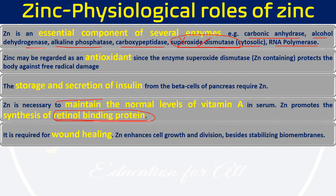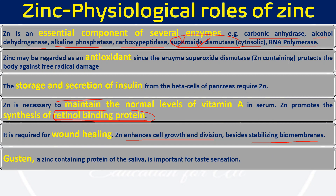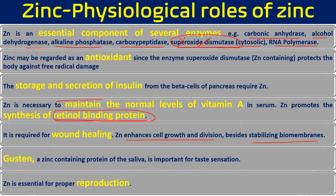Zinc is also required for wound healing. Zinc enhances cell growth and cell division, and it also stabilizes biomembranes, so wound healing and immunological functions depend on zinc. Gustin is another zinc-containing protein present in our saliva, and it is an important protein required for taste sensation. If we don't have zinc, taste sensation will not be present.